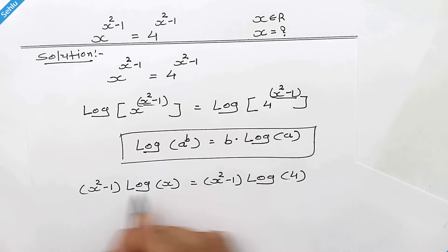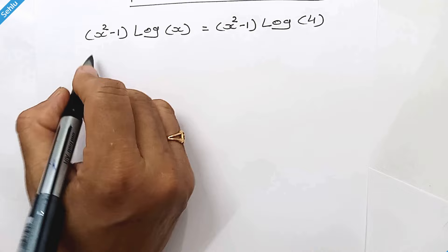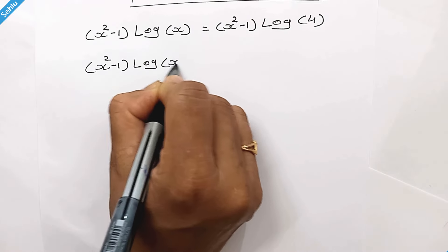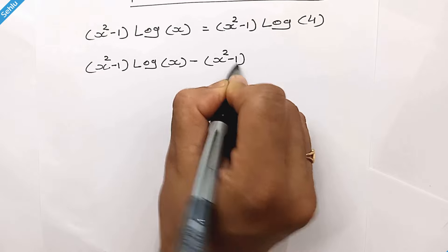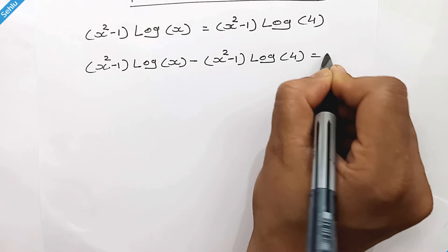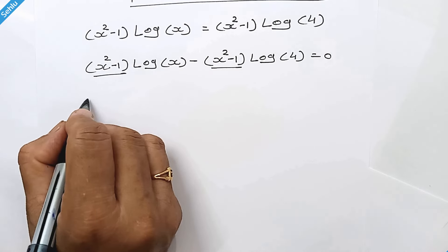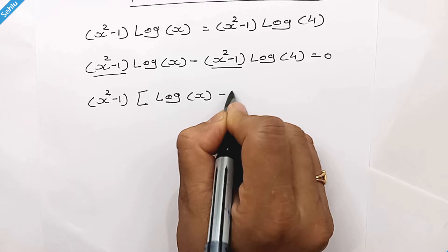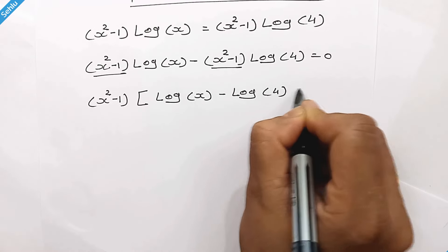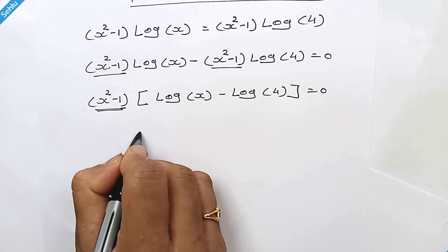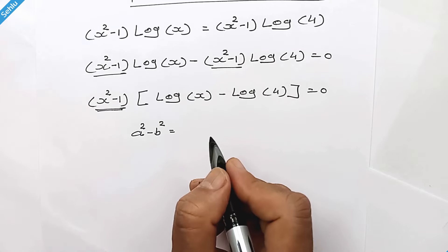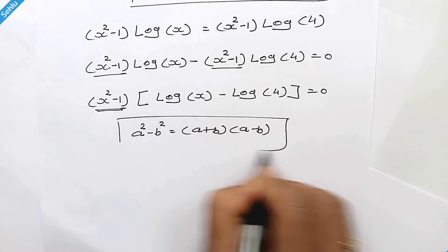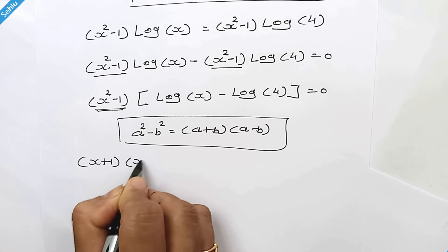Now we will move this entire term to the left hand side. So it will be x square minus 1 times log of x minus x square minus 1 times log of 4 is equal to 0. Factor out x square minus 1, giving log of x minus log of 4. Now we apply the identity a square minus b square equals a plus b times a minus b, so x square minus 1 becomes x plus 1 times x minus 1.